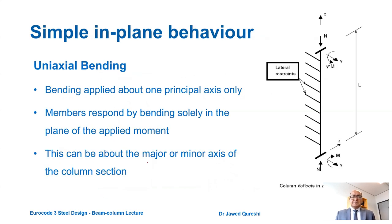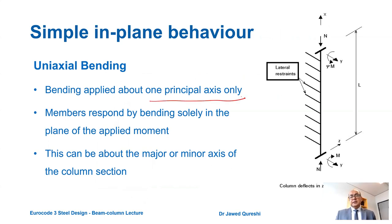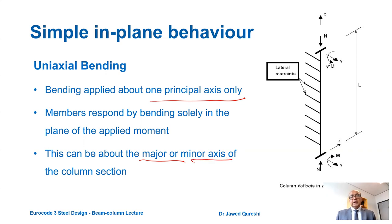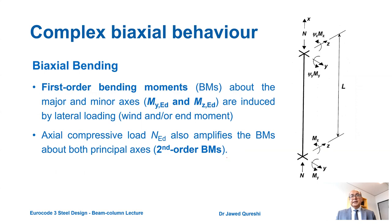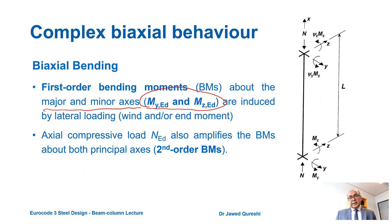Regarding simple in-plane behavior: uniaxial bending means bending is applied only about one principal axis. An axial load is applied and bending happens in one direction — either the major axis or the minor axis. Biaxial bending means the column is under axial load and bending is applied in both the major and minor axes, induced by lateral loading.